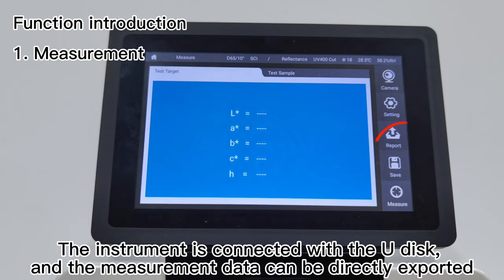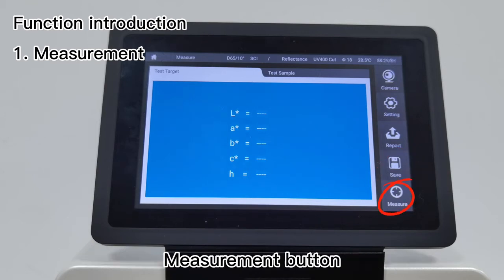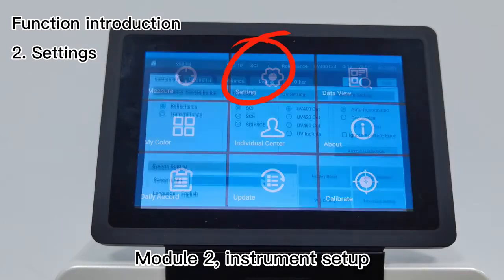The measured data can be saved to the machine using the measurement button. Module 2 is Instrument Setup.